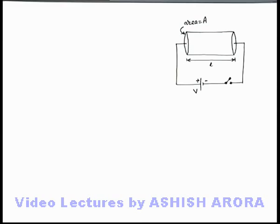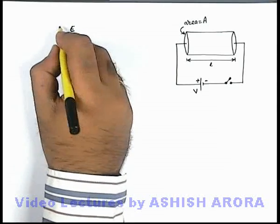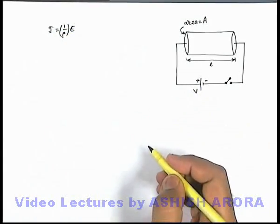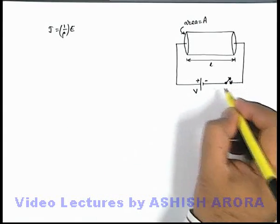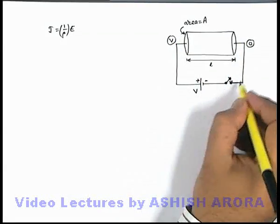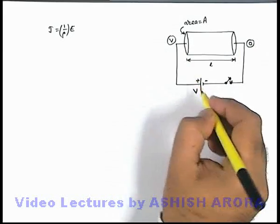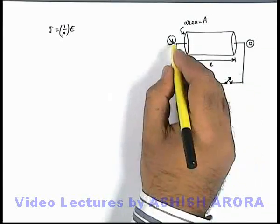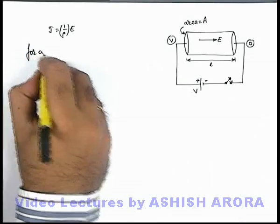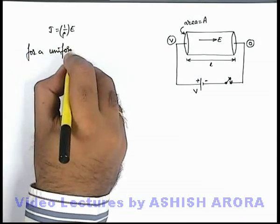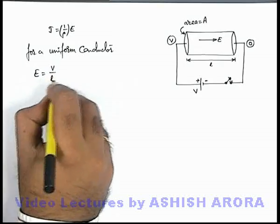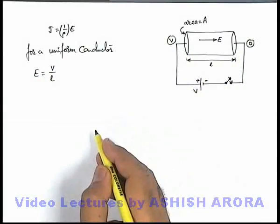Now let's apply the differential form of Ohm's Law — J = (1/ρ)E — to a uniform conductor connected across a battery. If we close the switch, the battery will apply a potential difference V across the conductor. We can consider the negative terminal to be at zero potential, then the positive terminal will be V volts higher. From high to low potential an electric field E is established, and for a uniform conductor we can write E = V/L if potential difference V exists across length L.